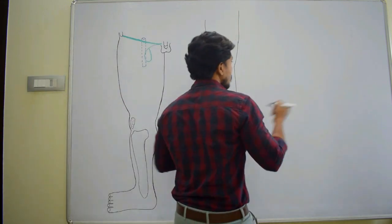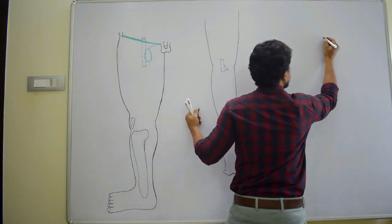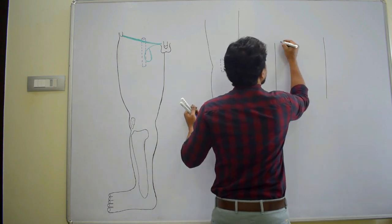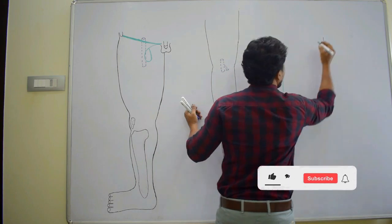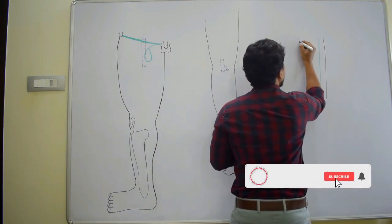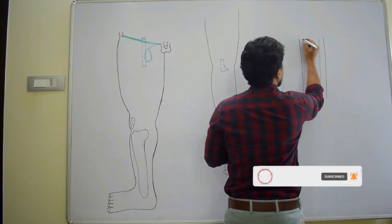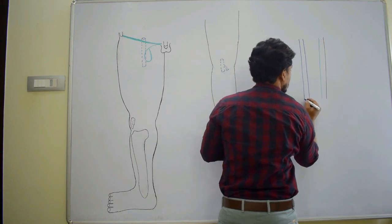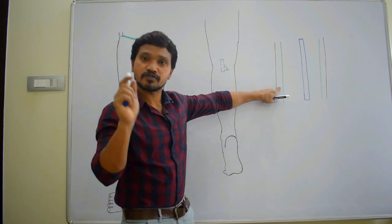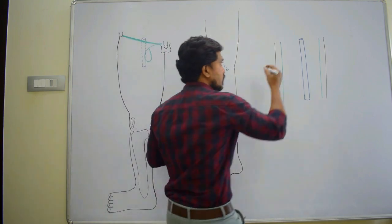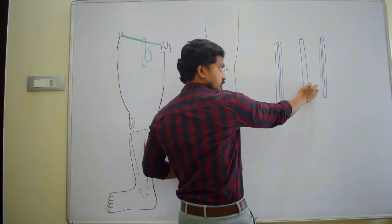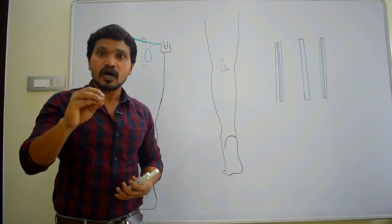Let me illustrate with a schematic diagram. Imagine this is the skin of the limb. Next to the skin is the superficial fascia, then the deep fascia. In the deeper aspect, we have deep veins — veins present deep to the deep fascia. Within the superficial fascia, the superficial veins are present. These superficial veins are connected with the deep veins either directly or through venous sinuses present in the muscles.